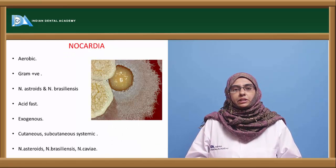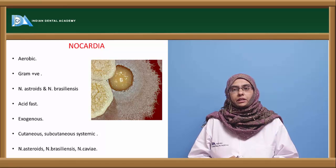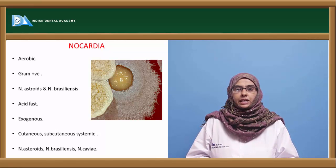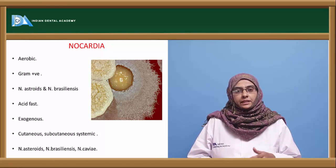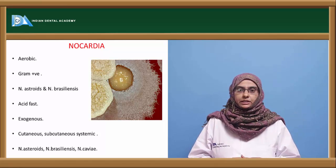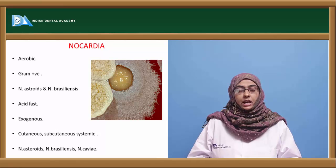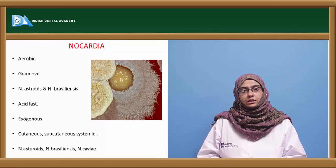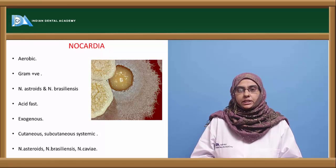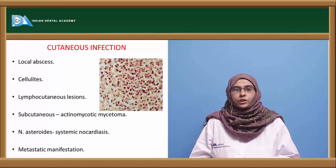The aerobic form of actinomycetes is Nocardia — aerobic, gram positive, and mostly acid fast. The acid-fast species are Nocardia asteroides and N. brasiliensis, present in soil and causing exogenous infection, unlike Actinomyces which causes endogenous infection. Three important types of infection are cutaneous (local abscesses, cellulitis, lymphocutaneous lesions), subcutaneous (actinomycotic mycetoma), and systemic.